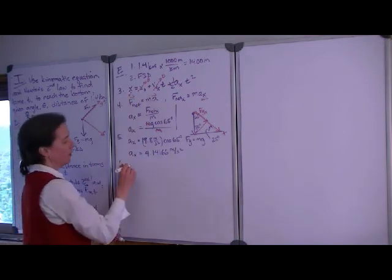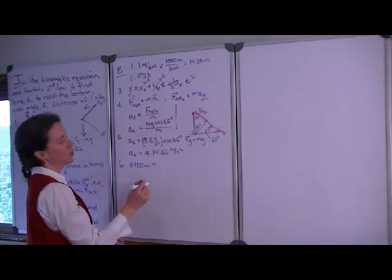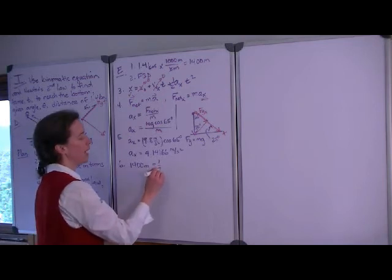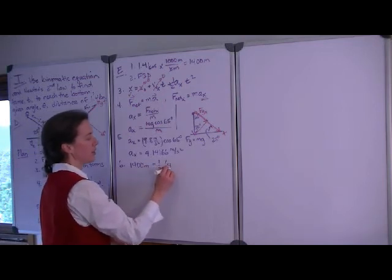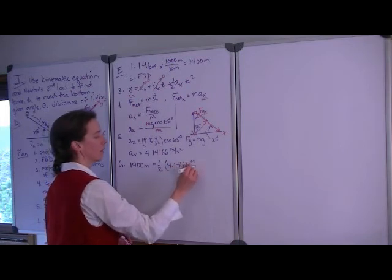So our x direction, the length of the hill, was 1,400 meters. And that's equal to, we had one term left in our equation of motion, one half times the acceleration in the x direction times time squared.